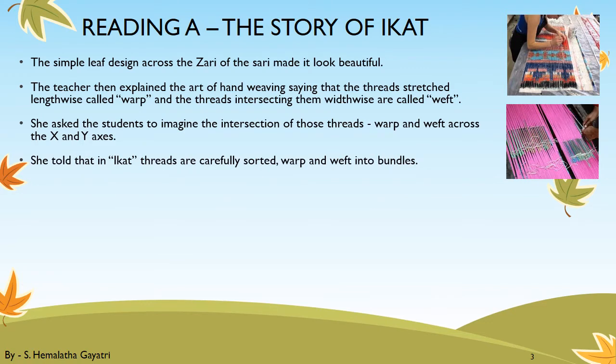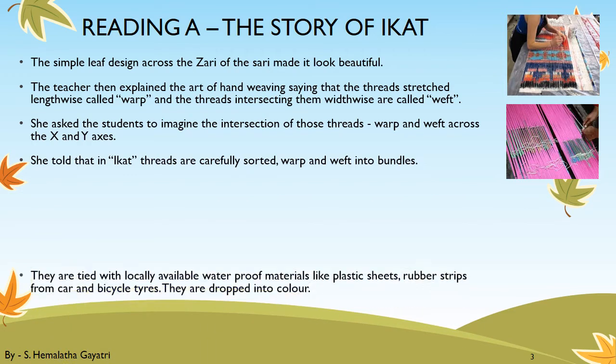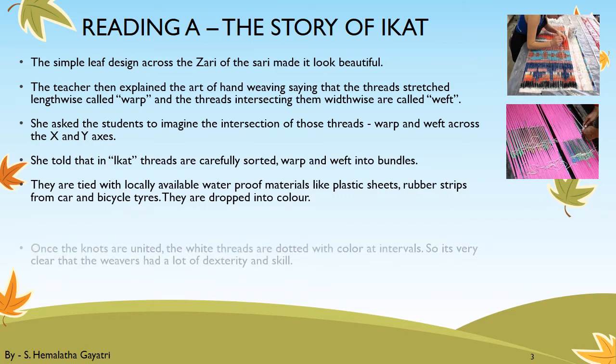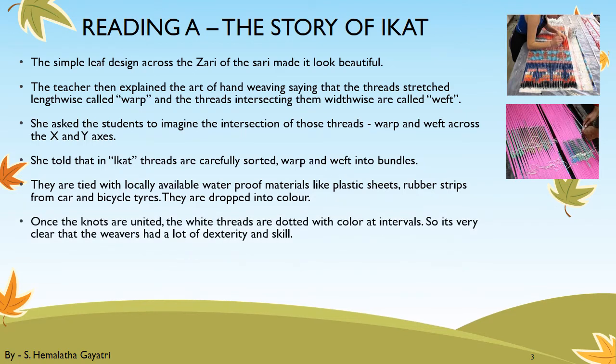She told that in Ikat, the threads are carefully sorted — the warp and weft are bound into different bundles. They are tied with locally available waterproof materials like plastic sheets, rubber strips from car and bicycle tires, etc. Then they are dropped into the colors. Once the knots are untied, the white threads are dotted with color at intervals. So it is very clear that the weavers had a lot of dexterity and skill.